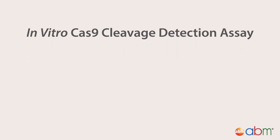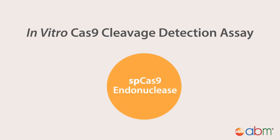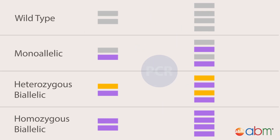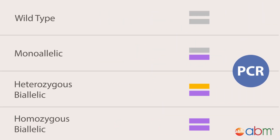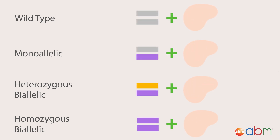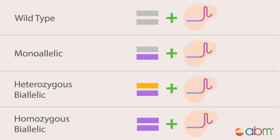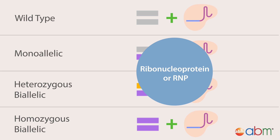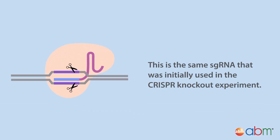Time for a new approach: option 3, the in vitro Cas9 cleavage detection assay. As the name suggests, the Cas9 cleavage assay uses the SpCas9 endonuclease to screen for gene editing in vitro. First, the gene of interest is PCR-amplified. Next, the PCR product is incubated with the SpCas9 endonuclease equipped with a sgRNA specific to your gene of interest. Together, this is called a ribonucleoprotein, or RNP. Importantly, this is the same sgRNA that was initially used in the CRISPR knockout experiment.